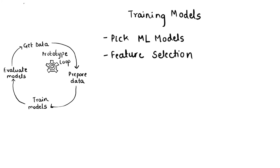During model training, the data scientist might perform feature selection — the process of selecting only a subset of features as inputs to the machine learning model. The benefit of reducing the number of input variables is to reduce the computational cost of model training, make the model more generalizable, and possibly improve the model's performance.